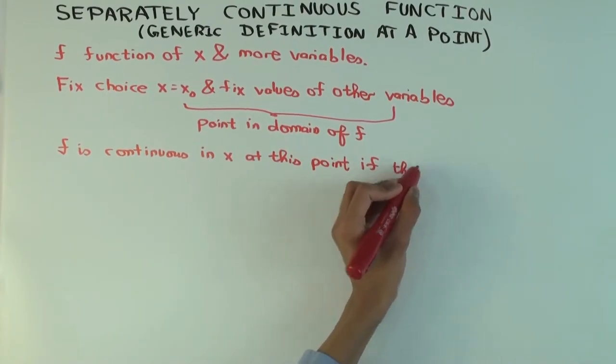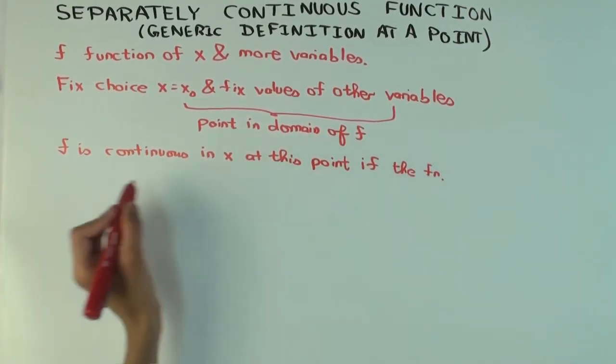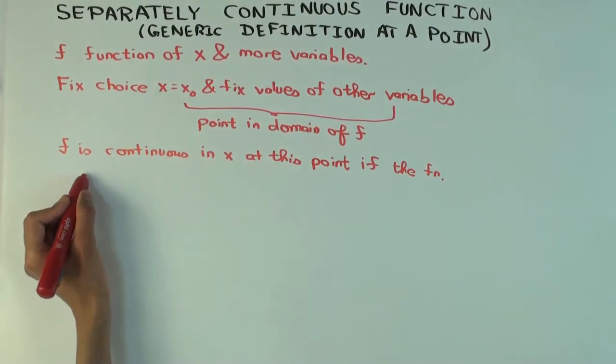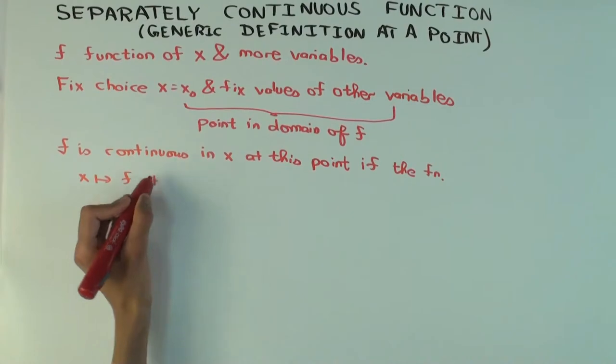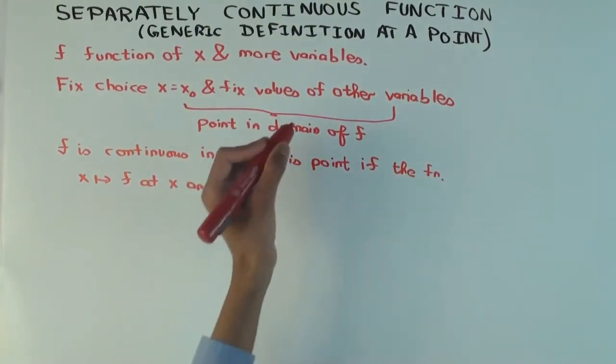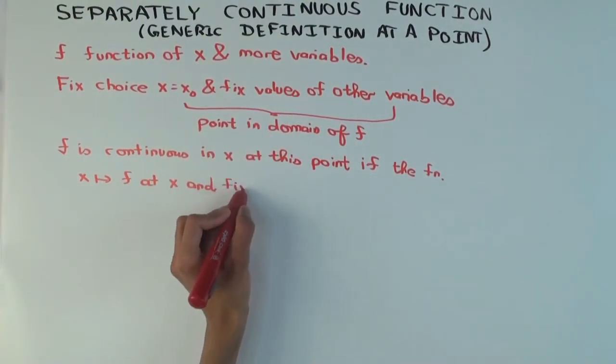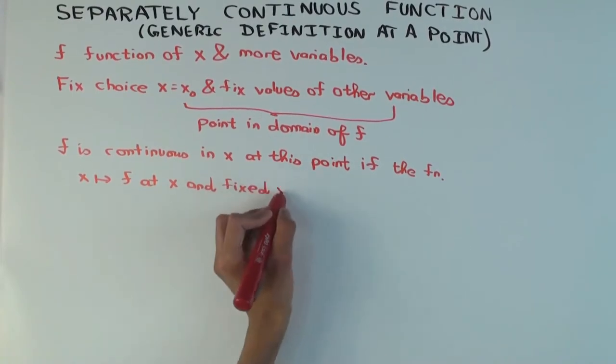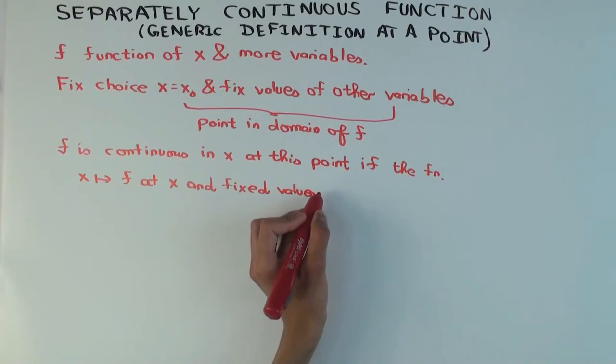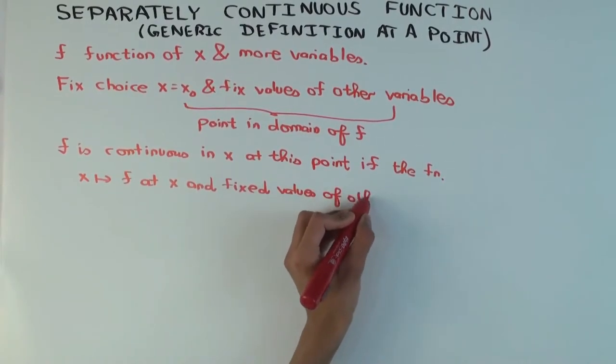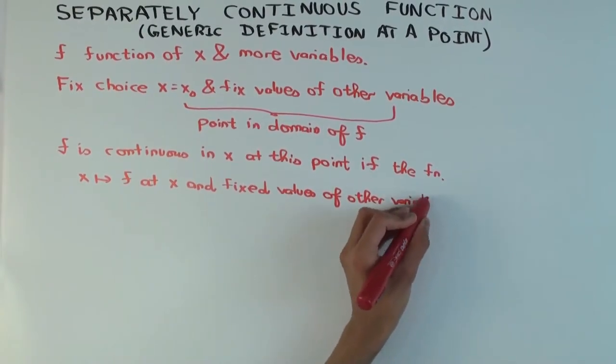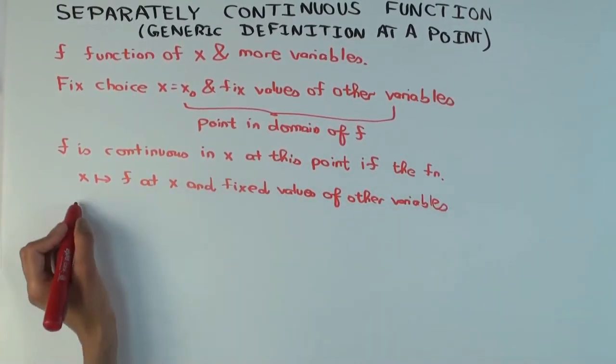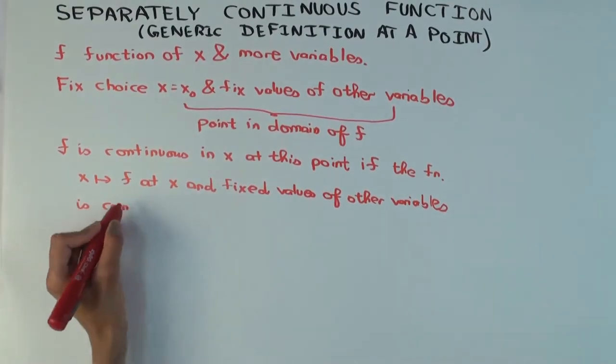if the function which sends x to f at x and the fixed values of the other variables is continuous at x equals x naught.